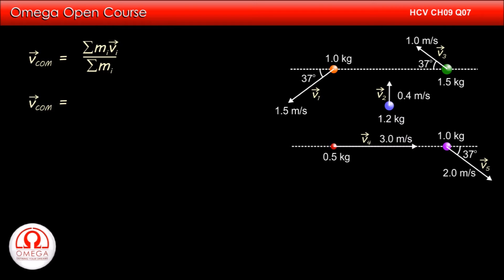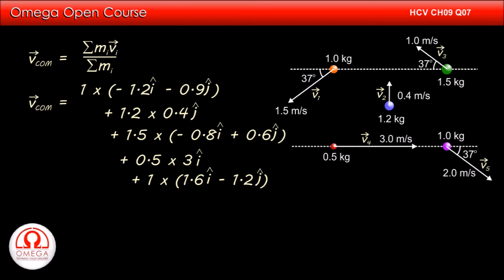Putting the values in the expression, we get velocity of center of mass equals 1 into minus 1.2 i cap minus 0.9 j cap plus 1.2 into 0.4 j cap plus 1.5 into 0.8 i cap plus 0.6 j cap plus 0.5 into 3 i cap plus 1 into 1.6 i cap minus 1.2 j cap divided by 1 plus 1.2 plus 1.5 plus 0.5 plus 1.